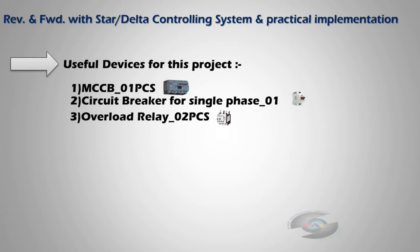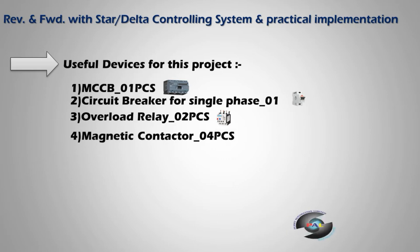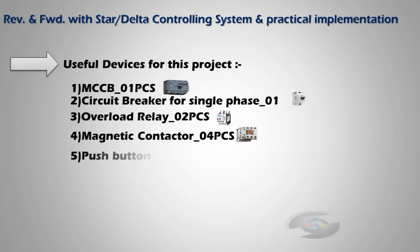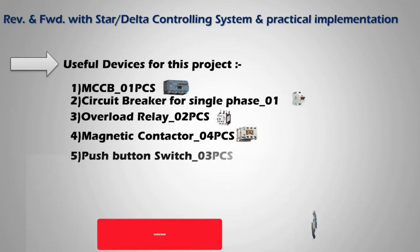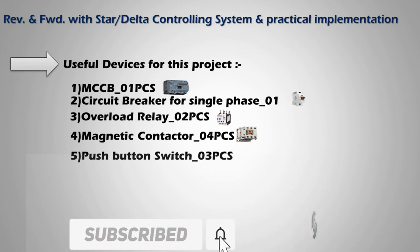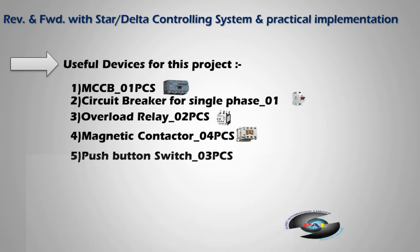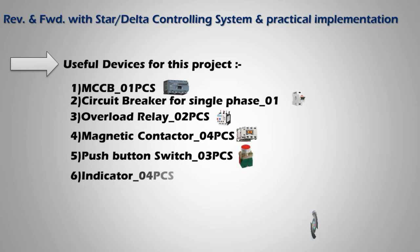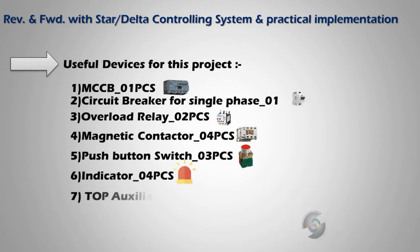Fourth is the magnetic contactor — four contactors total: two for reverse and forward, and two for star and delta. Fifth is the push button — important for starting and stopping operations, starting reverse, and starting delta. Sixth is the indicator — indicating power, reverse, forward, star, delta — all processing is indicated by this indicator. Next is the timer auxiliary, a single piece, which is a very important device.